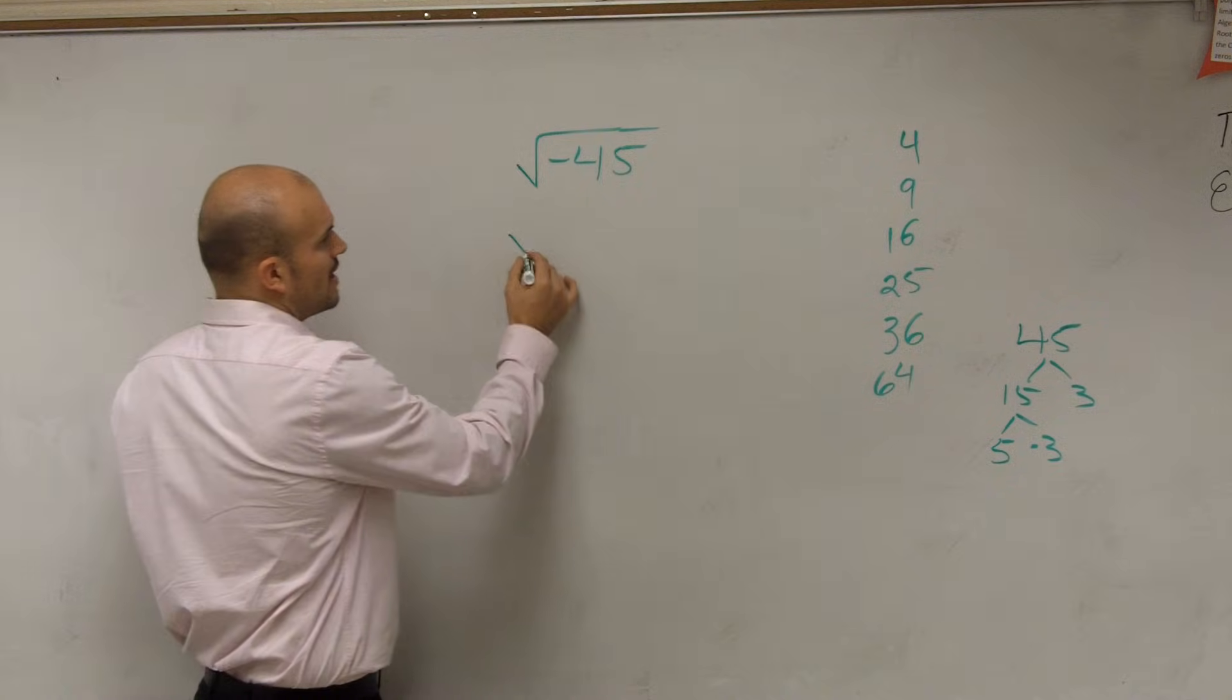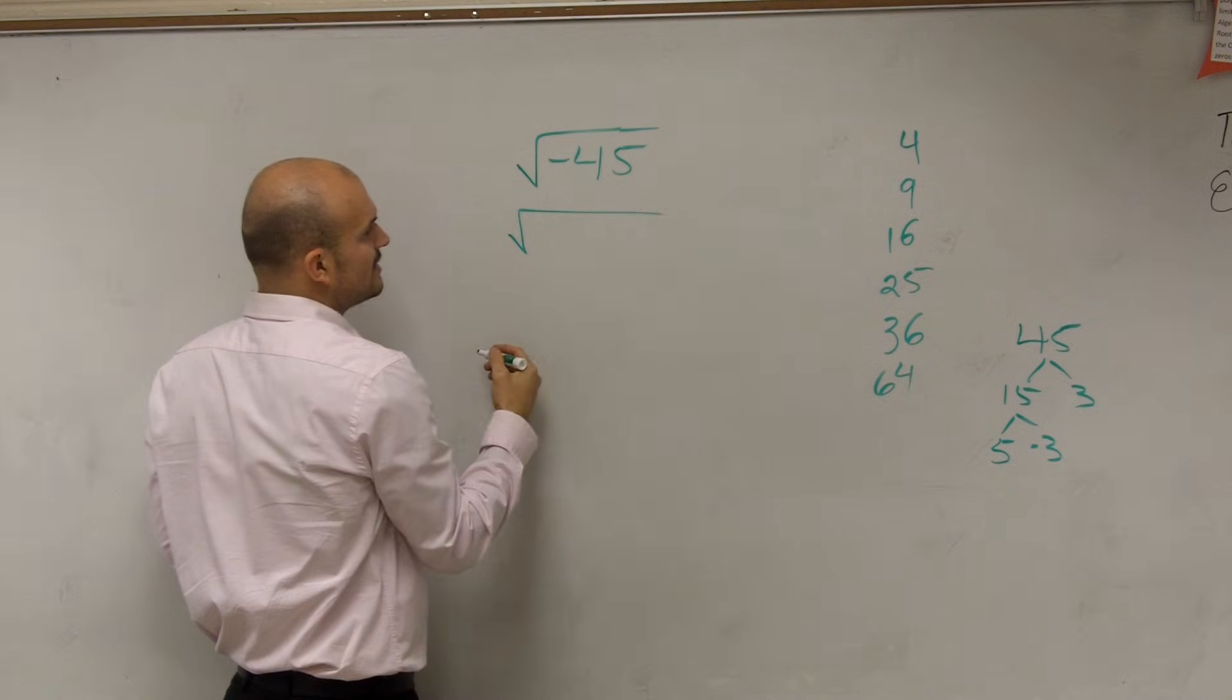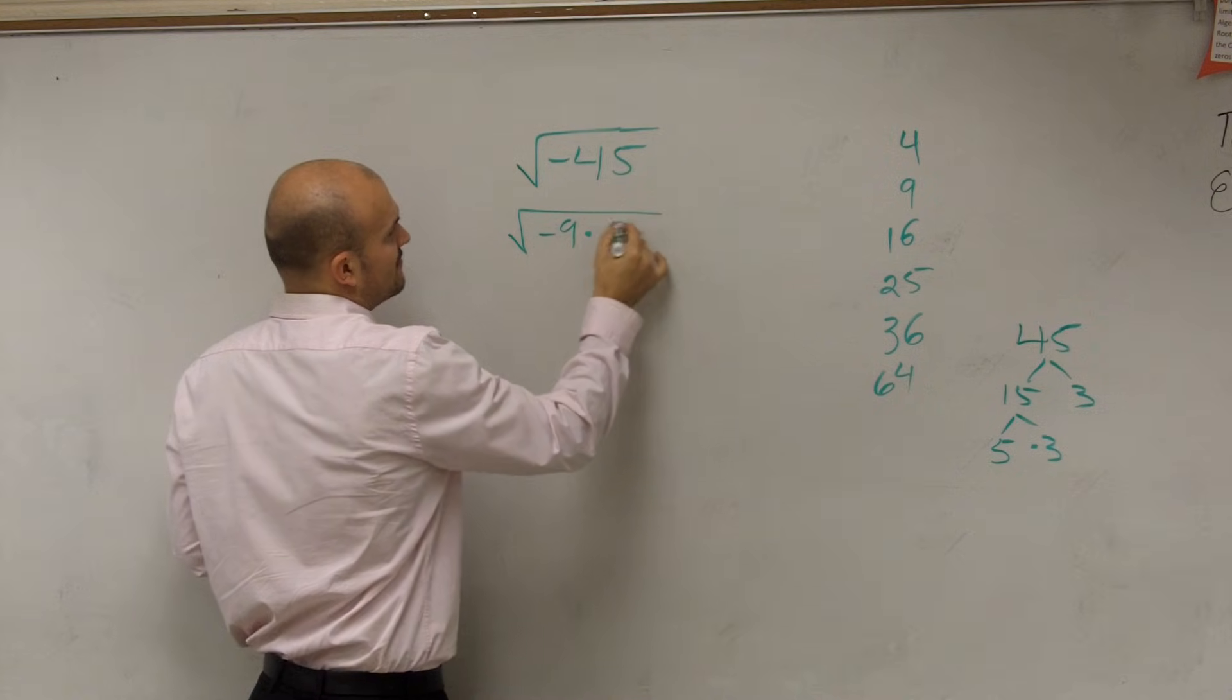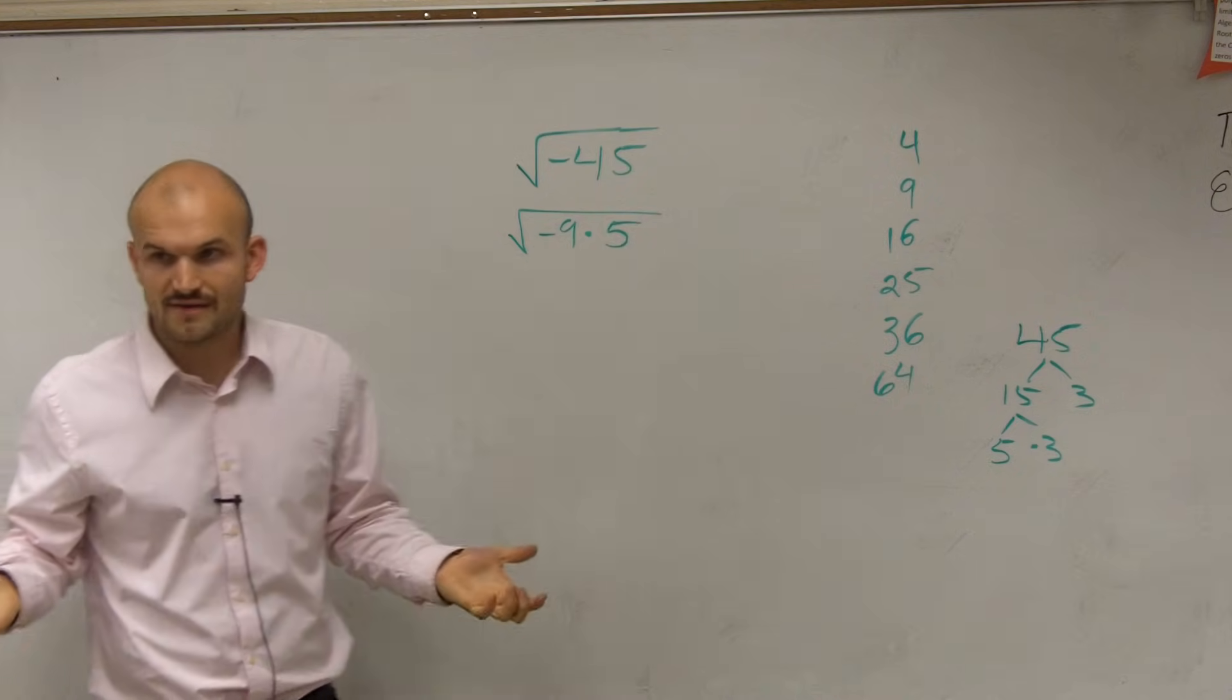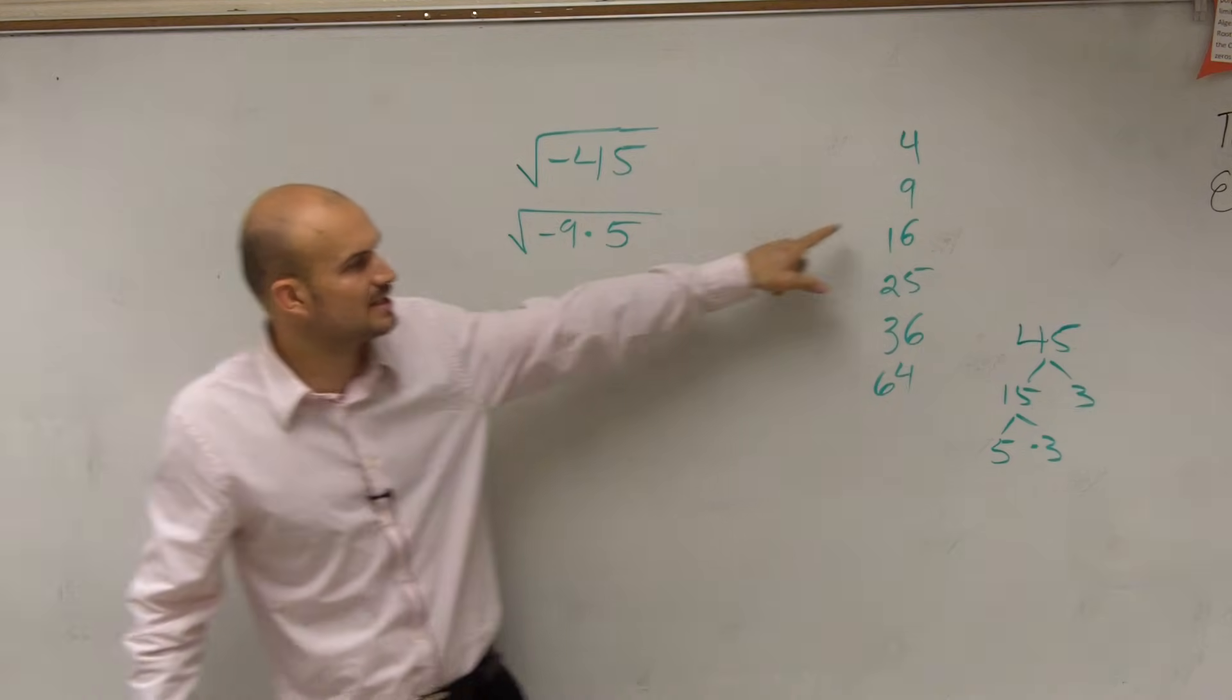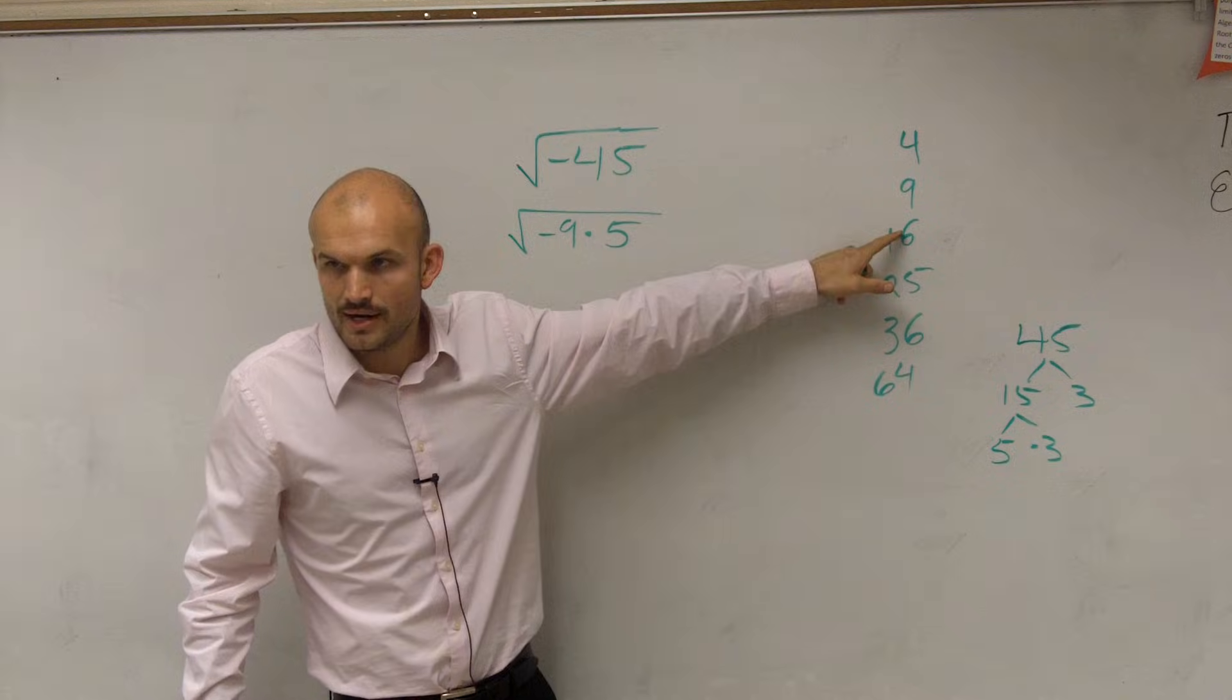However, you can also just rewrite it. Why don't I rewrite this as 9 times 5? The reason why I'm going to choose 9 times 5 is because 9 is a square number.